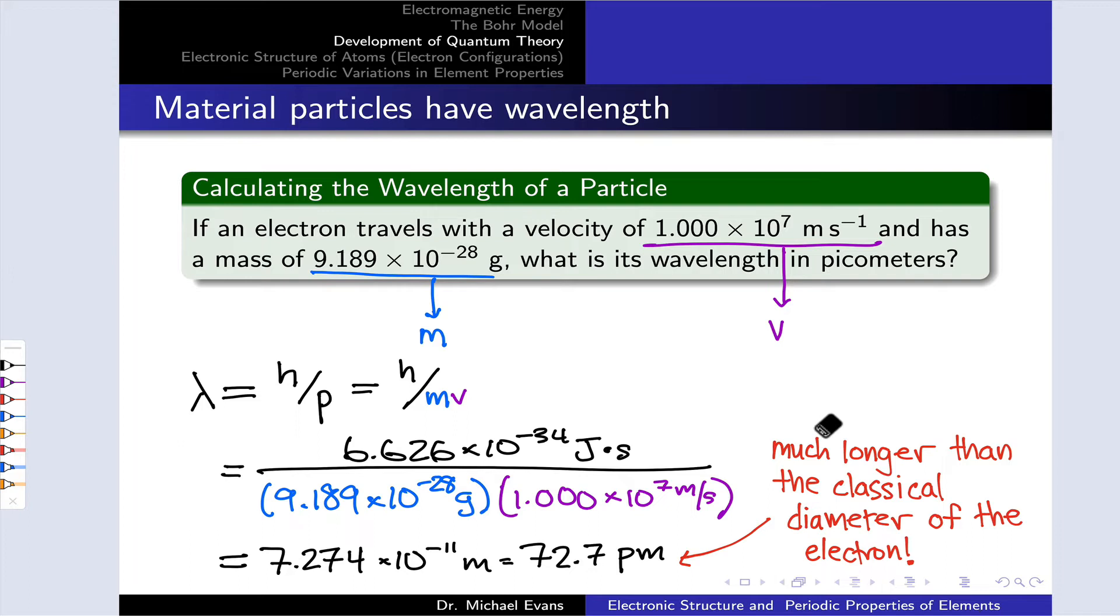One thing to point out, which is mentioned in the readings in more detail, is the wave-like nature of the electron constrains how it can behave within the atom. Because the electron, in some sense, must act like a standing wave inside the atom. These wavelengths are on the order needed to make that work.